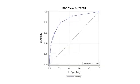Next, a receiver-operator characteristic curve is displayed, known as the ROC curve, which shows sensitivity — that is, the true positive rate — and specificity — the true negative rate — plotted against each other.